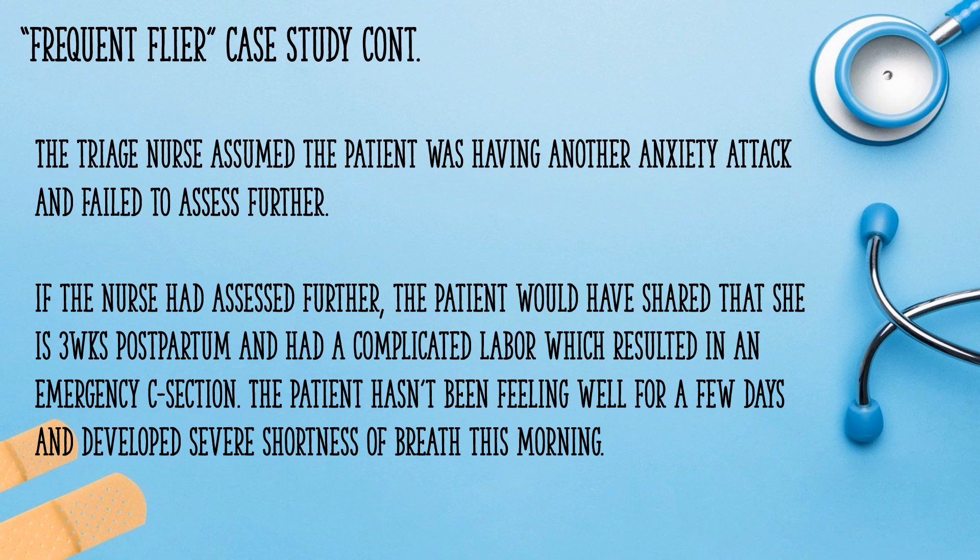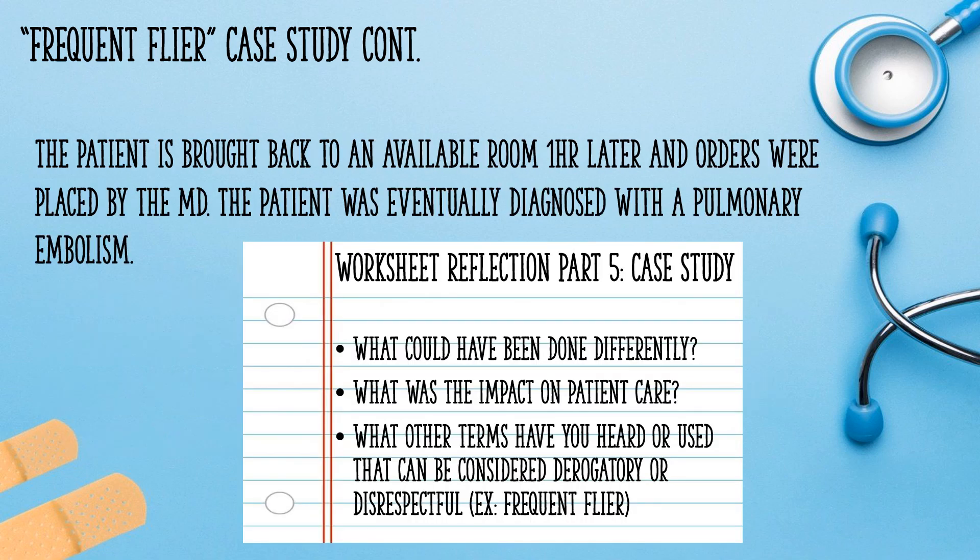The triage nurse assumed the patient was having another anxiety attack and failed to assess further. If the nurse had assessed further, the patient would have shared that she is three weeks postpartum and had a complicated labor which resulted in an emergency C-section. The patient hasn't been feeling well for a few days and developed severe shortness of breath this morning. The patient was brought back to an available room one hour later, and orders were placed by the doctor. The patient was eventually diagnosed with a PE — pulmonary embolism. On your worksheet, do some reflection: what could have been done differently? What was the impact on patient care? What other terms have you heard or used that could be considered derogatory or disrespectful, like frequent flyer?